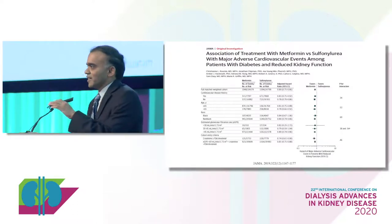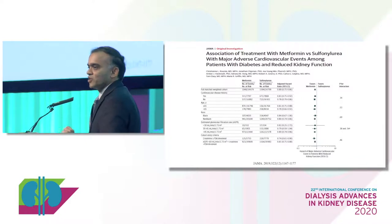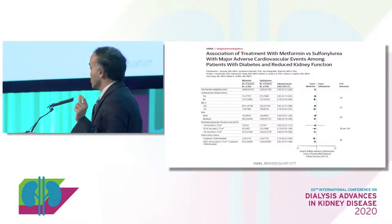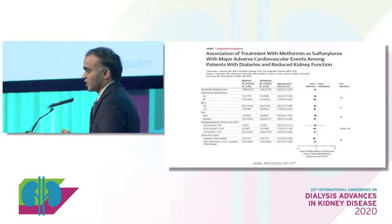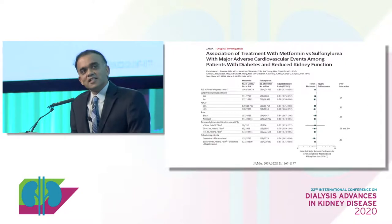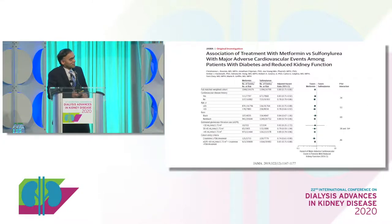Regarding metformin — there are no clinical trials testing whether metformin improves cardiovascular and kidney outcomes in this population. The best available evidence is a comparative effectiveness study selecting people with diabetes and reduced kidney function on metformin versus those on sulfonylureas. In this observational data, metformin was associated with a 20% reduction in cardiovascular events. ADA and other guidelines also currently recommend metformin as first-line, and we are in alignment with that.